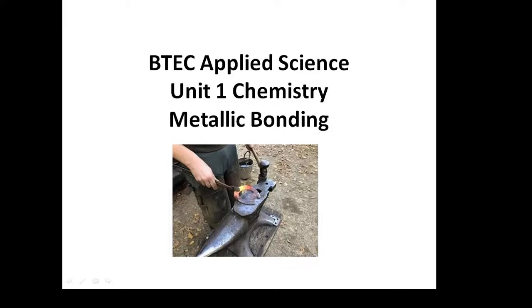BTEC Applied Science Unit 1 Chemistry: Metallic Bonding. We've talked about ionic bonding and covalent bonding. This video is about metallic bonding and the properties of metals.